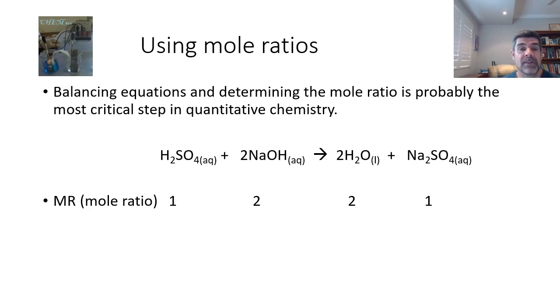Therefore, the first thing we have to do is make sure that we have balanced equations. And that's why this is such a critical step. In this case, we have sulfuric acid combining with sodium hydroxide. Now, this is a nice classic example of an acid plus base reaction.